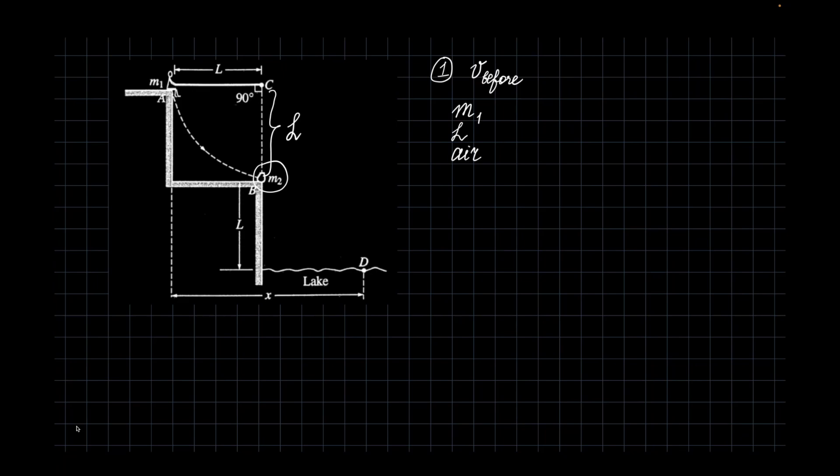And pretend that there is no air, meaning conservation of energy. So velocity right before the person hits. The velocity of the person right before the collision is pretty easy. Conservation of energy. Gravitational initial will be equal to kinetic final.